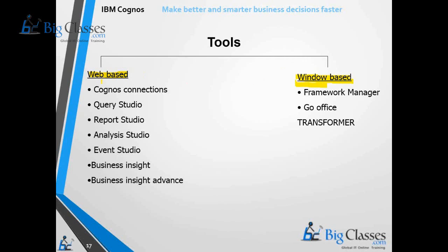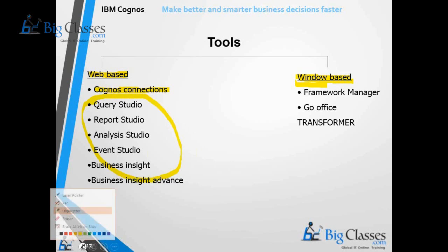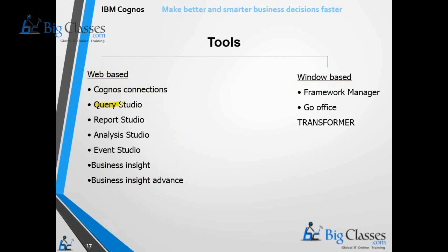In web-based applications, Cognos Connection is the entry point for all remaining web-based applications. If you want to access any web-based application, first you need to connect to Cognos Connection, and from there you can find links for all the remaining reporting applications. It is the Cognos Connection portal.